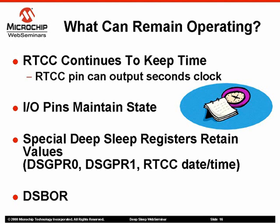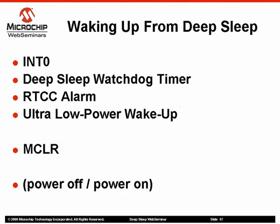In addition to these features, several different WakeUp sources can be enabled to operate through DeepSleep. The most common WakeUp sources available for DeepSleep include Interrupt Zero, the DeepSleep Watchdog timer, a real-time clock calendar alarm, and ultra-low power WakeUp.